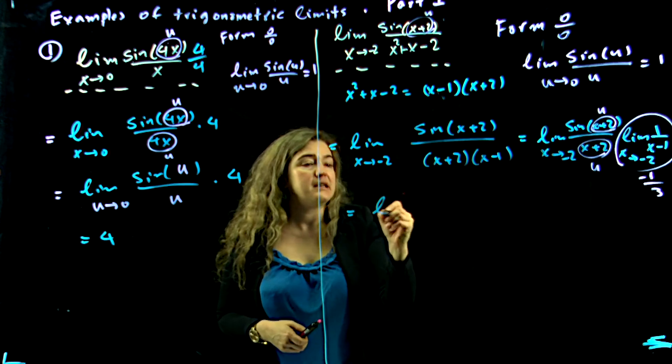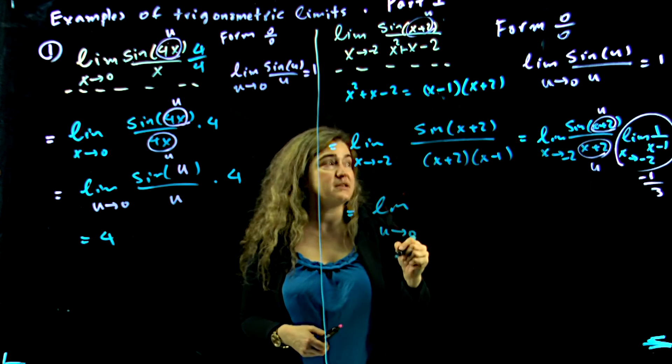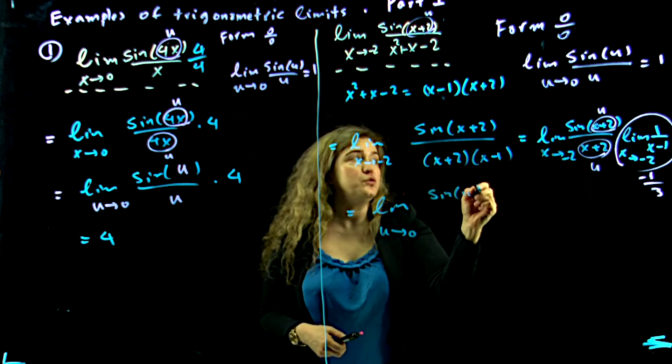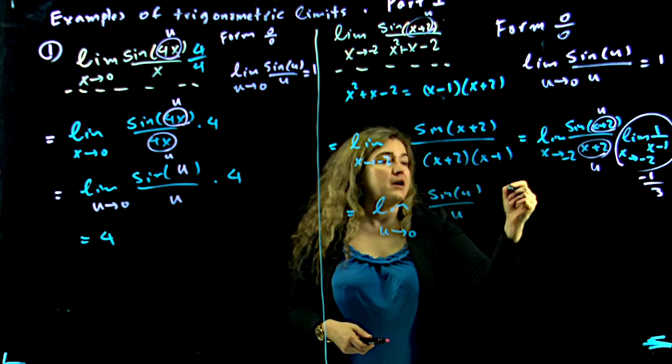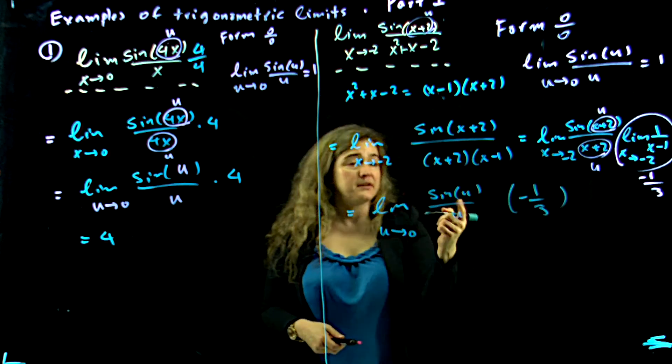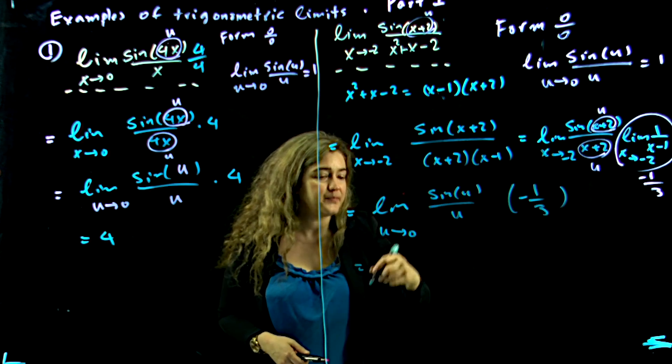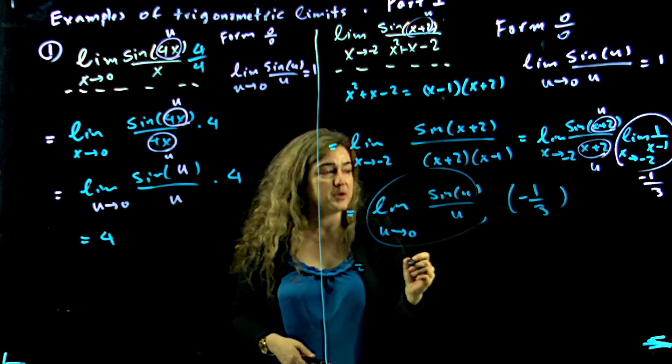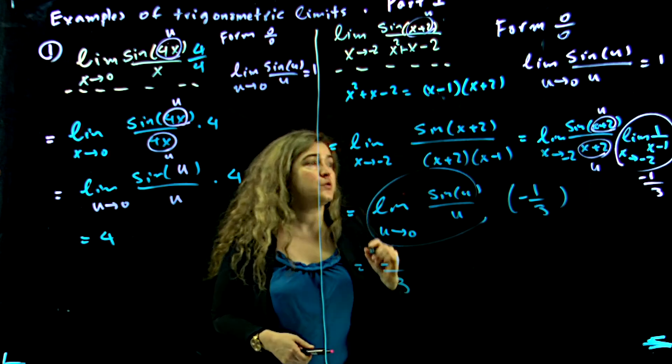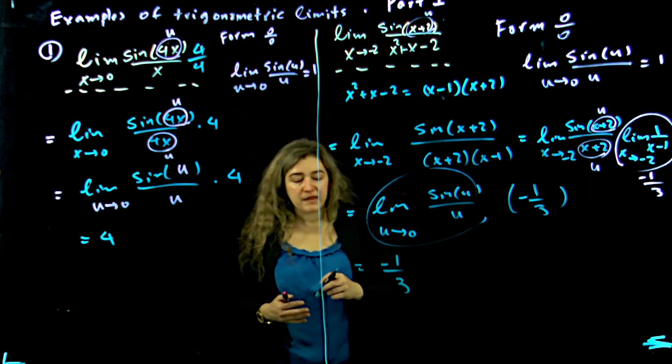So I'm going to have limit as u approaches 0 of sine of u over u times negative 1 third. And this is going to be 1. This part entirely is going to be 1. So the answer is going to be negative 1 third.